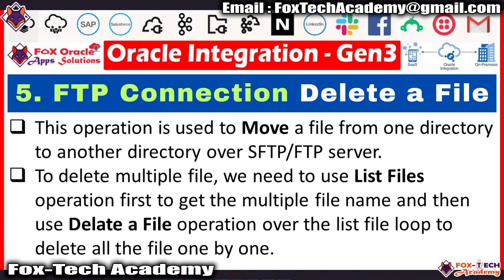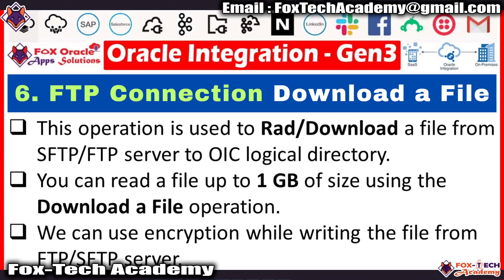Then we have the delete a file operation — it's a simple operation. With the help of delete a file, we can delete a file present on a specific SFTP server. Finally, we have the download a file operation. As mentioned, the read a file operation cannot read data files greater than 100 MB. In that case, we use the download a file operation to download the file from the SFTP server to the OIC virtual directory. After that, we use the stage file activity to read the file in segments and read the large data.